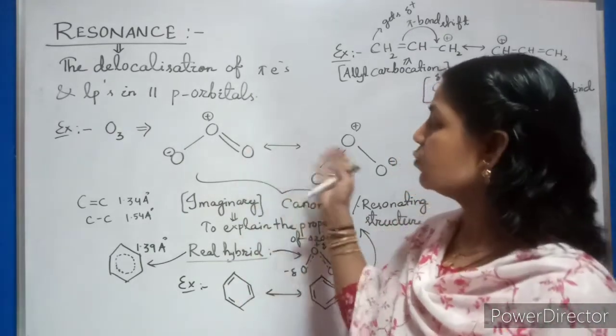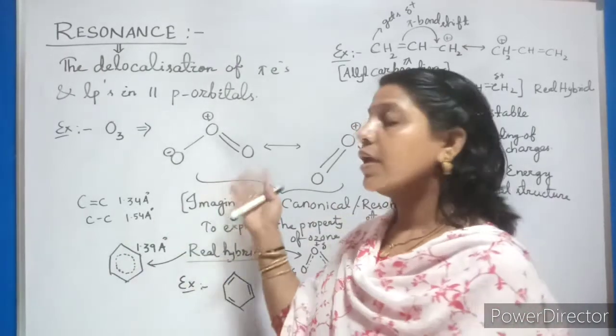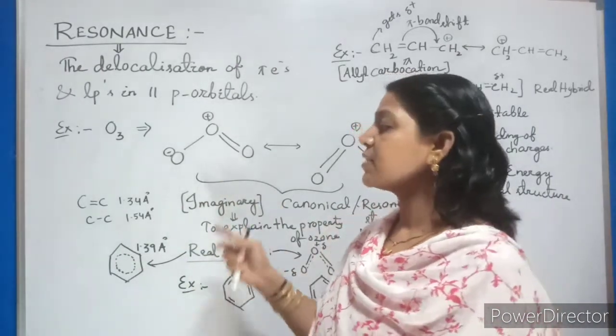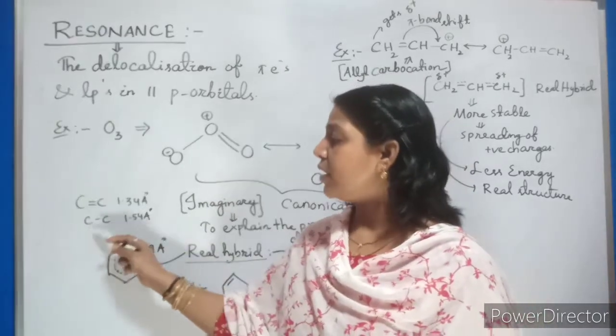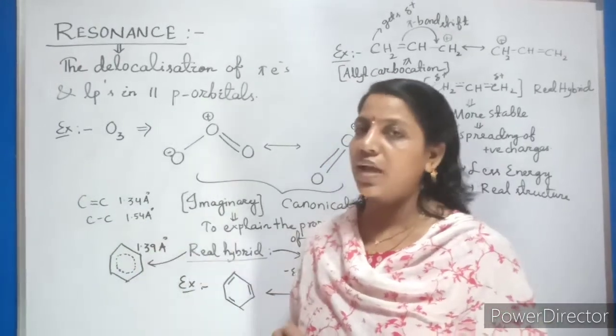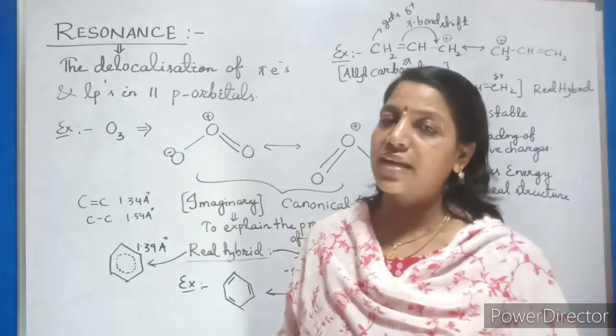What exactly makes the difference between these imaginary and real? See for example, if you are seeing your carbon and carbon single bond, the bond length is nothing but 1.54 angstrom. If you go for double bond, you will find 1.34 angstrom.